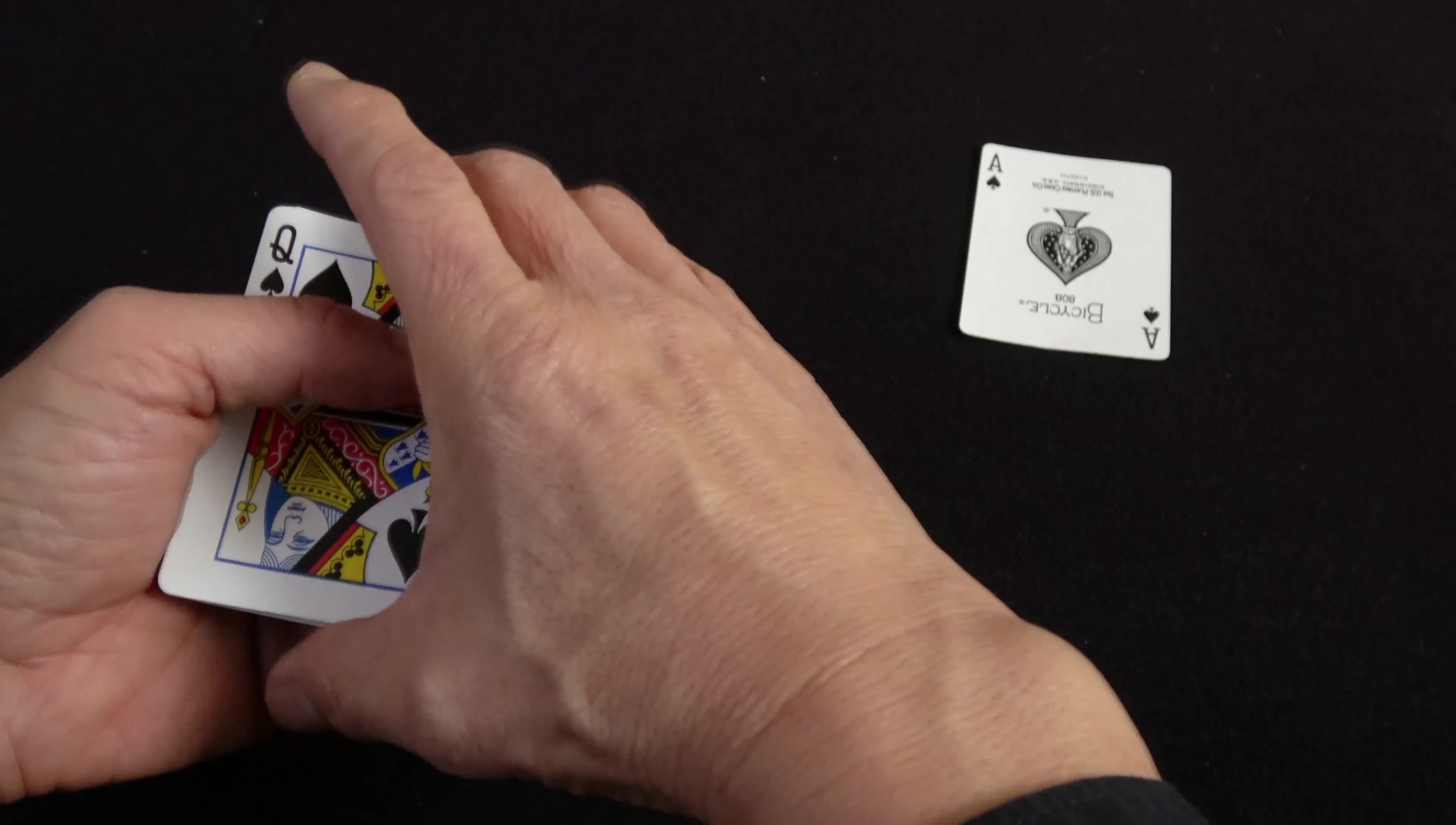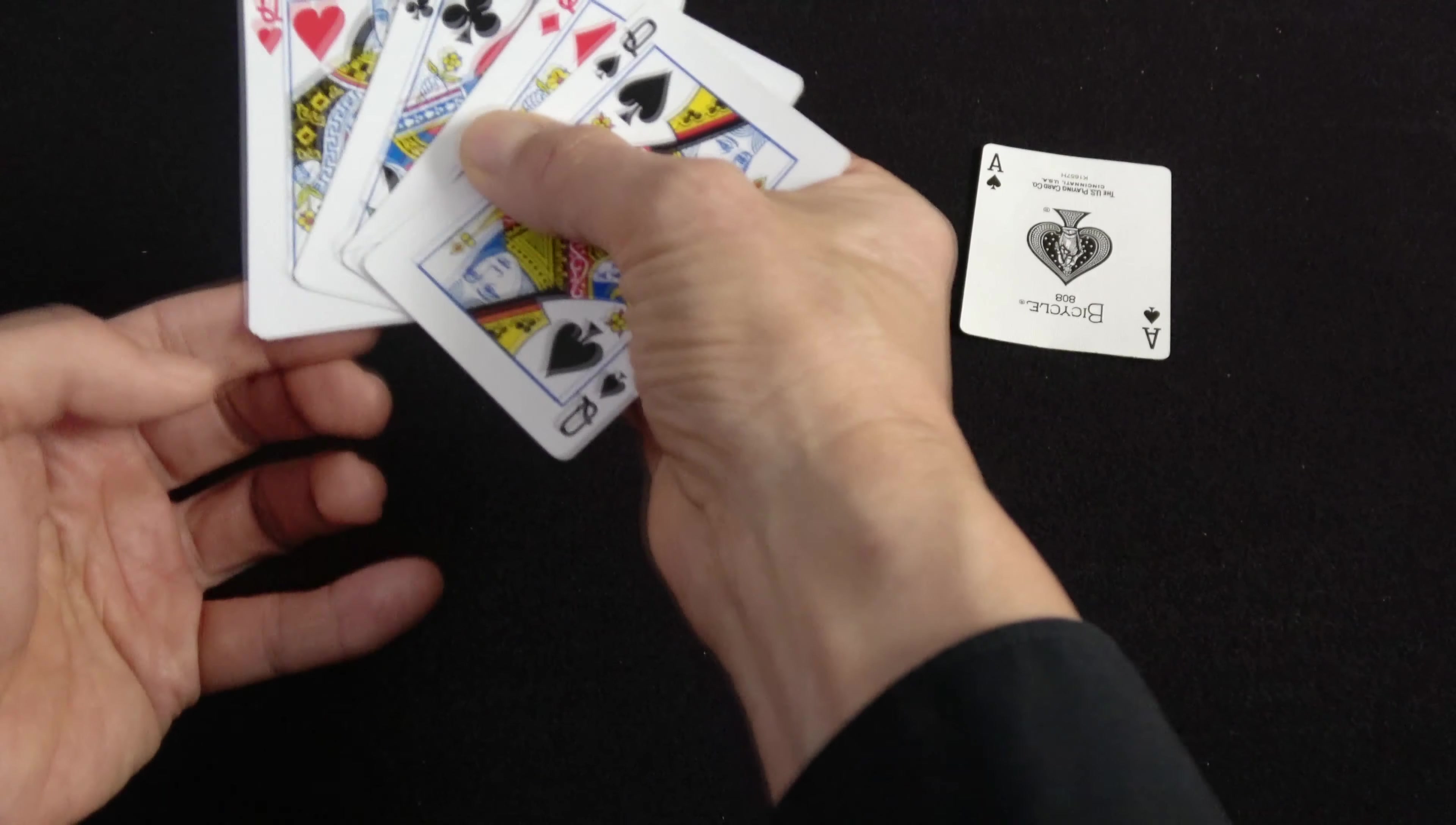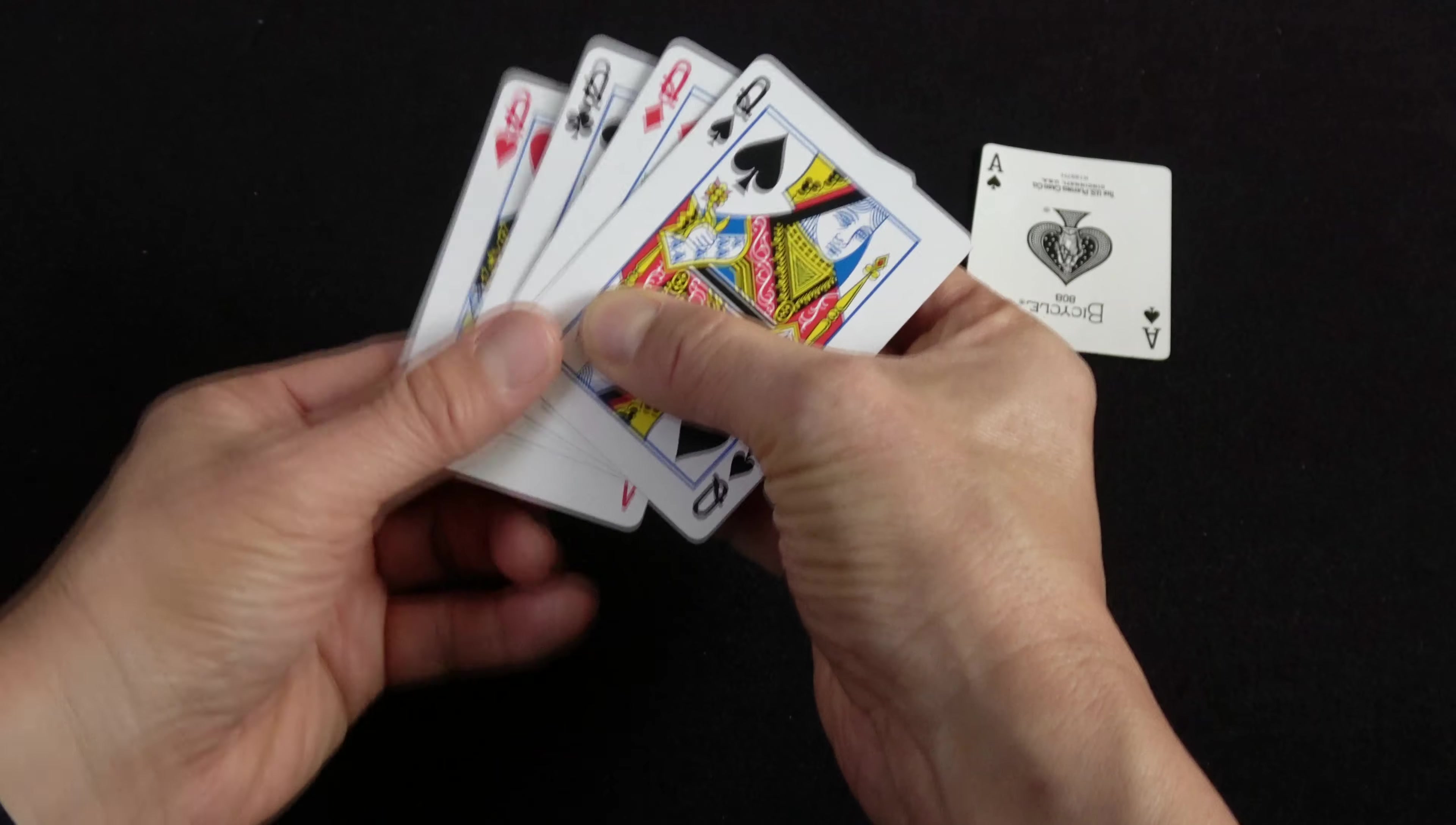The first part is the display. When you show the cards, you can't just show it like this because there are corners here that have creases. When you spread the cards, you need to spread them in an upward fashion and cover these seams with your thumb.